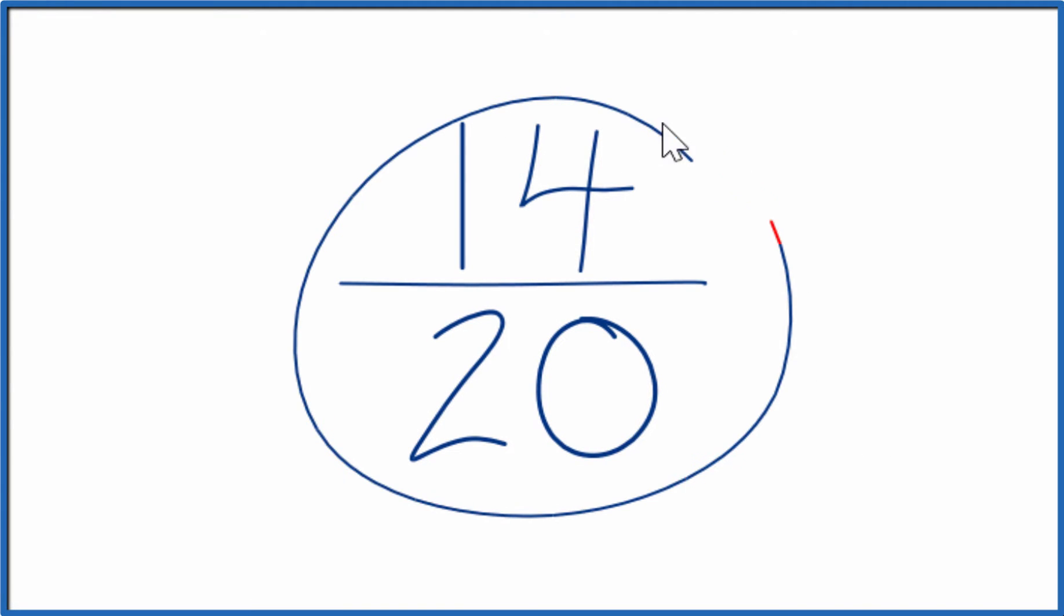Let's simplify the fraction 14 20ths. Here's how we do it. We're looking for another fraction that's equivalent to 14 divided by 20.